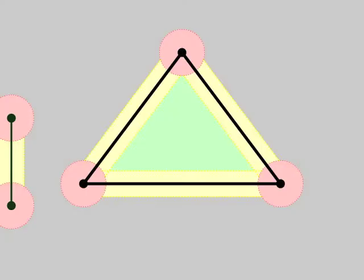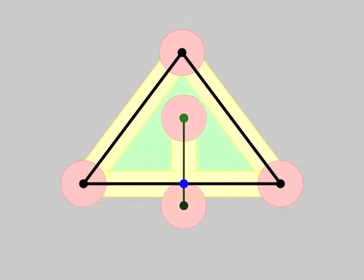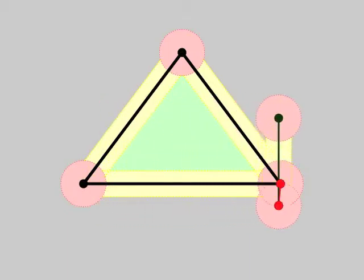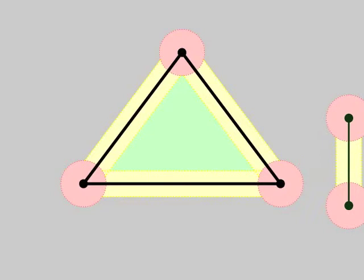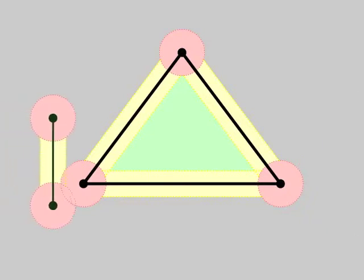We first illustrate our robust intersection computation. Red and yellow dots indicate point-point and point-edge degeneracies. Blue and green indicate edge-edge and point-triangle intersections, which can be computed robustly after rejecting degeneracies.